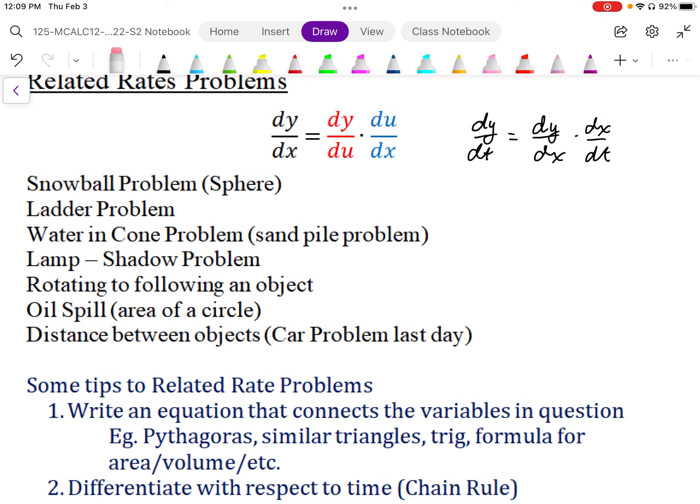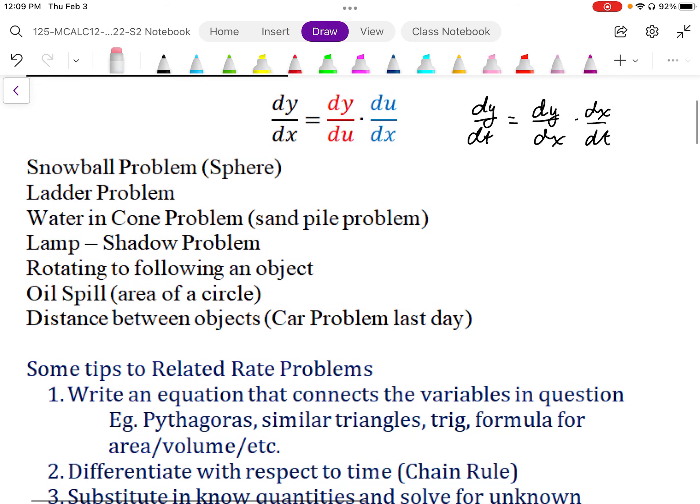And then the oil spill problem, where the area of the oil spill increases, we want to know how the radius changes as we put more oil into that oil spill. And the distance between objects, and we did a car problem in the previous day. These are essentially the few different types of problems we run into with related rates.